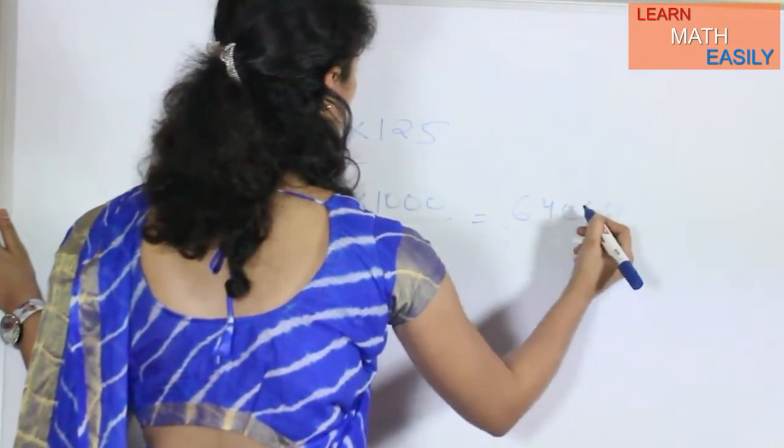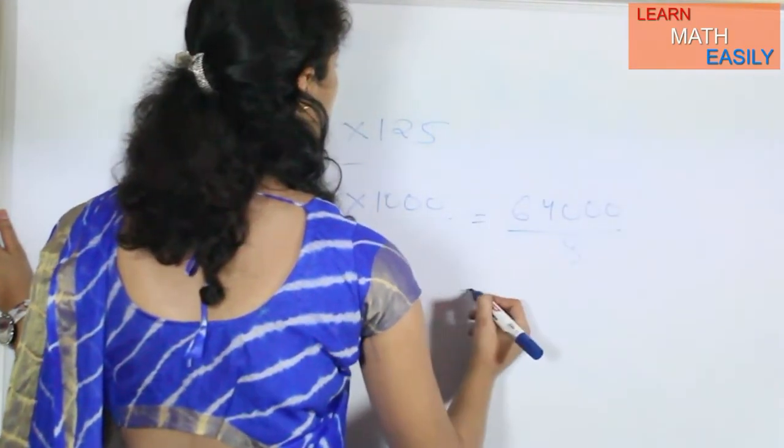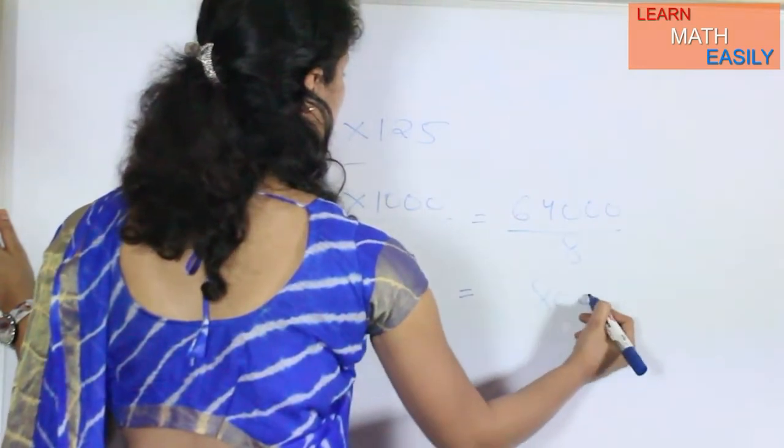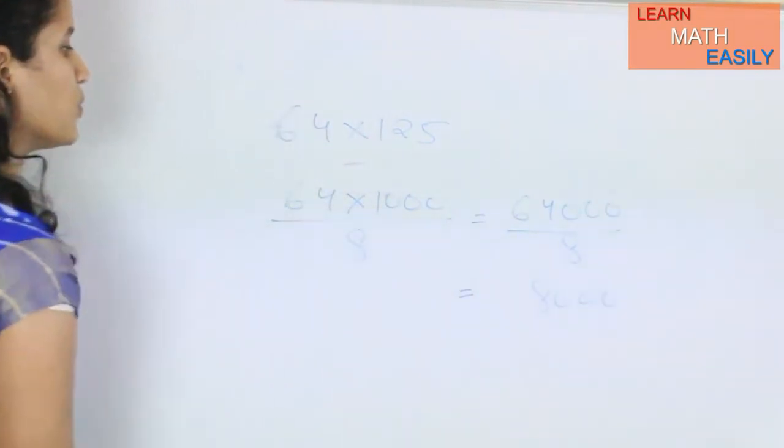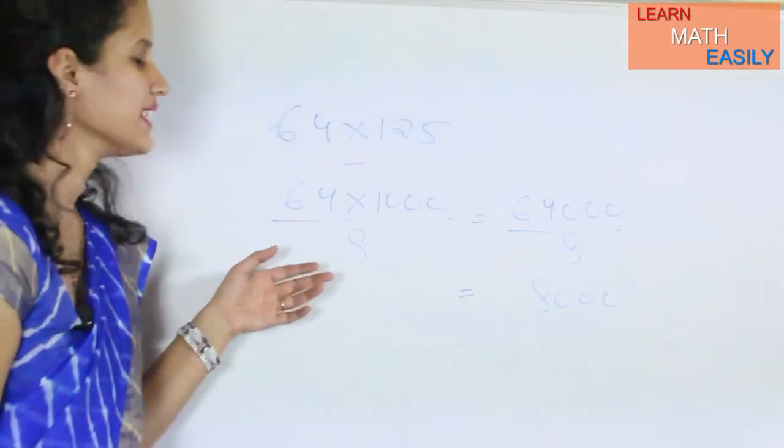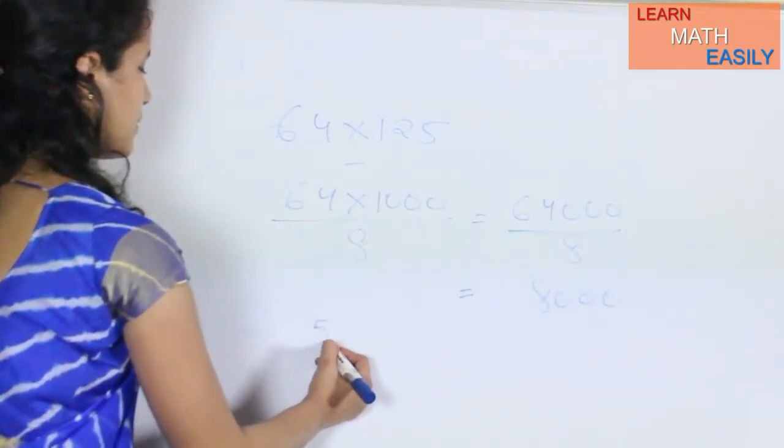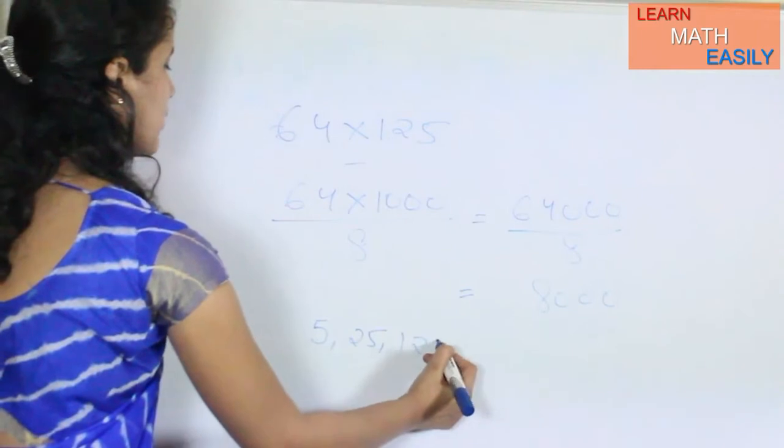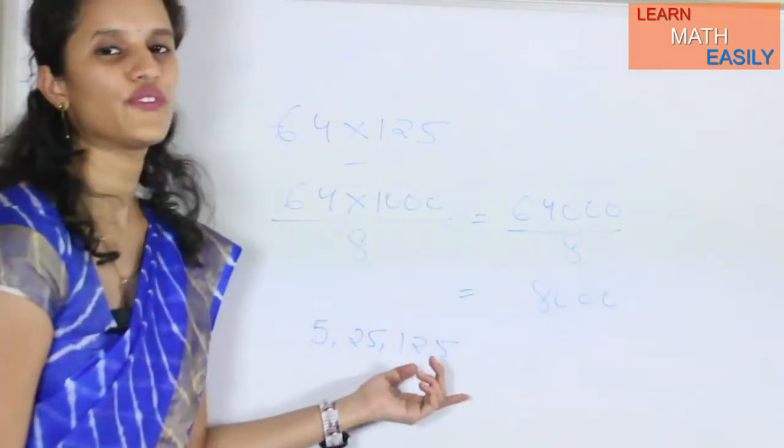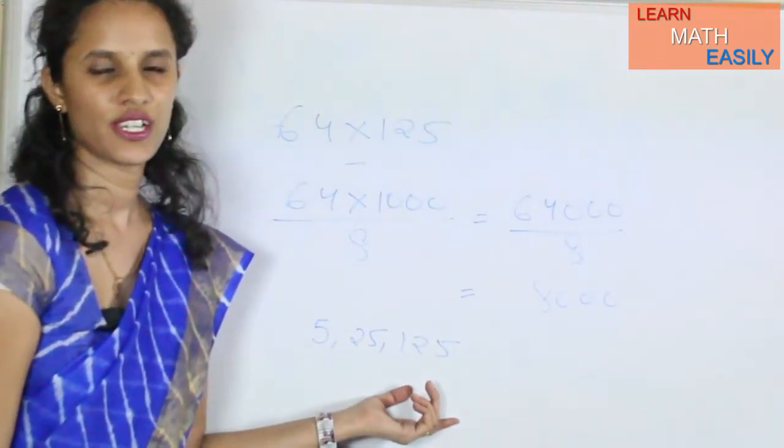So you can multiply any number with 5, 25, and 125 within a few seconds.